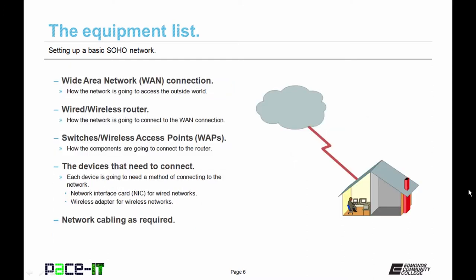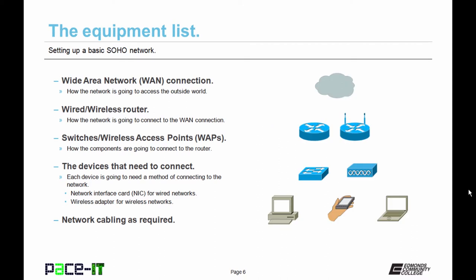With that, let's move on to your equipment list. The first thing you need to consider is your wide area network connection — your WAN connection. How is the network going to access the outside world? Then you should consider what type of wired or wireless router you're going to use, and how the network is going to connect to that WAN connection.